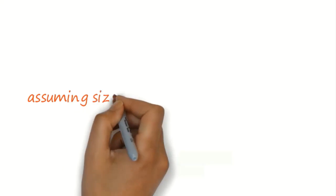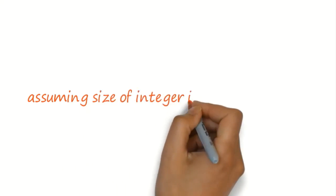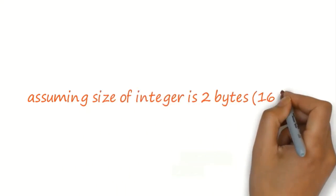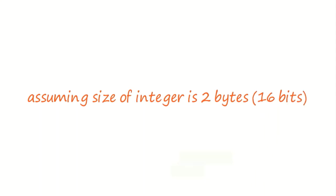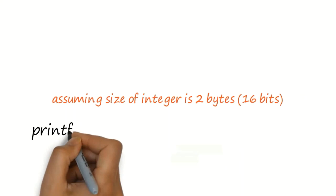Here, I am assuming size of an integer as 2 bytes, that is 16 bits. However, modern compilers use 4 bytes for integer representation. So in the question, ideally, it should be mentioned.